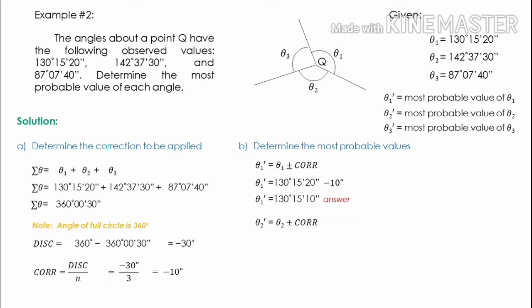Second, θ2 prime is the most probable value of θ2. θ2 prime equals θ2 plus or minus the correction. Since the correction is negative, we subtract: 142 degrees 37 minutes 30 seconds minus the correction of 10 seconds gives us 142 degrees 37 minutes and 20 seconds — the most probable value of θ2.